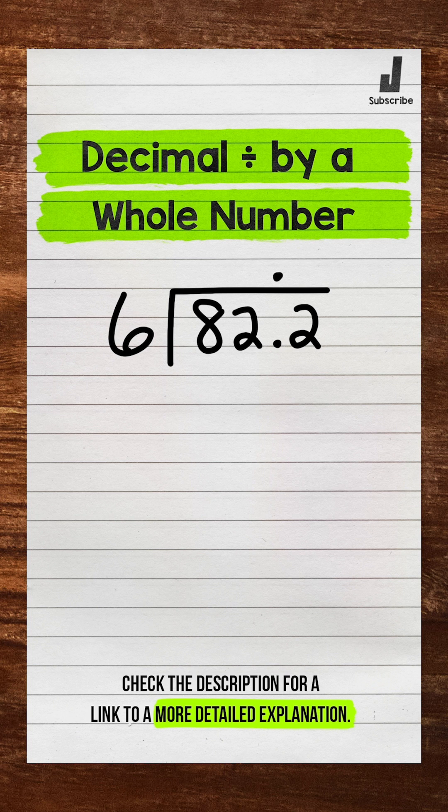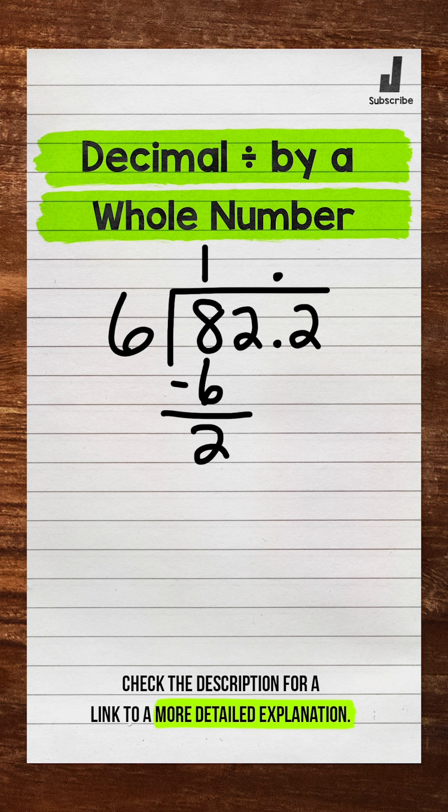We start with divide. We have 8 divided by 6, which is 1. One whole group of 6 in 8. Now multiply. 1 times 6 is 6. Subtract. 8 minus 6 is 2. And then bring down. So we have 22 now.